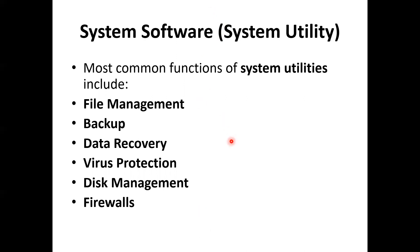We will end this lecture here. Today we discussed what a computer is, what computer hardware is, what computer software is, the different types of software, and the various system softwares. We were also discussing system utilities, but as it will take a long time, we will continue discussing system utilities in the next lecture. Thank you.